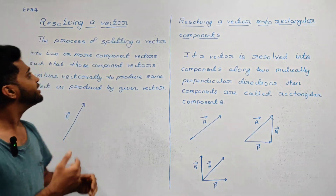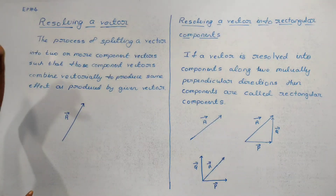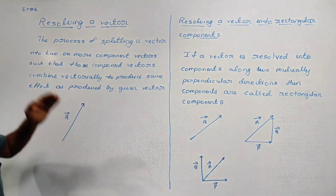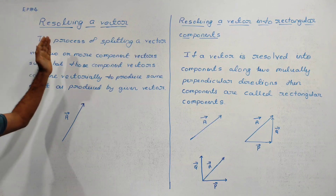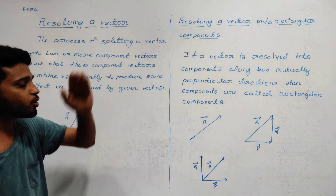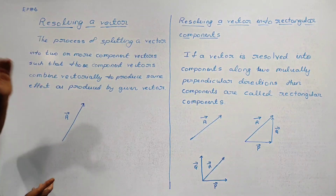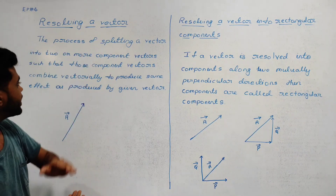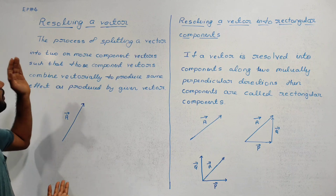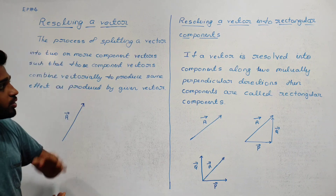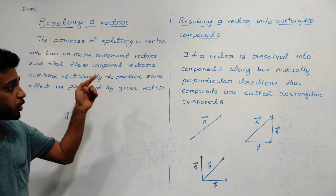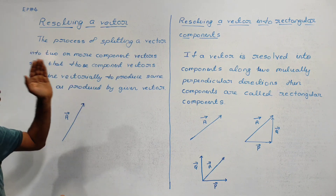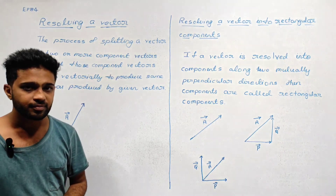The process of splitting a vector into two or more component vectors such that those component vectors combine vectorially to produce the same effect as produced by a given vector.